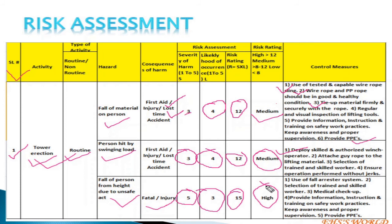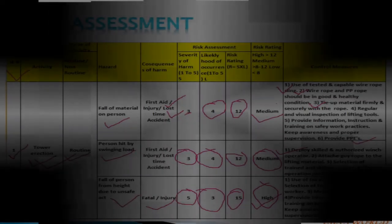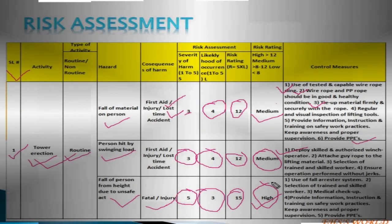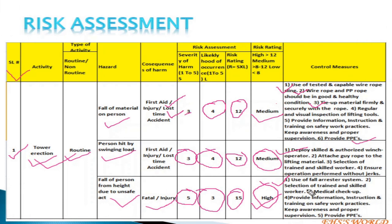For fall of person from height — the risk is high. Control measures required include: use of a fall arrestor system; selection of trained and skilled workers; medical checkup for workers; provide information, instruction, and training on safe work practices; keep awareness and proper supervision; and provide proper PPE. These control measures must be implemented to reduce the risk involved in the activity.